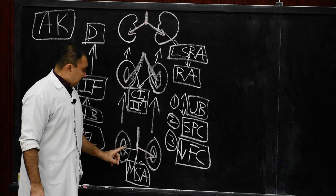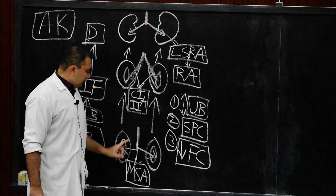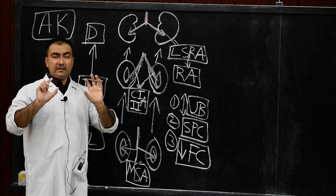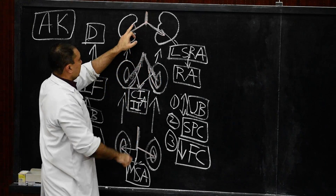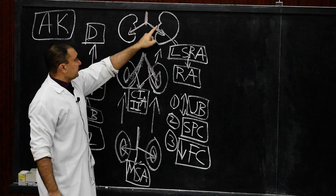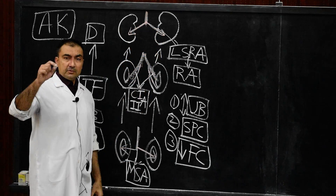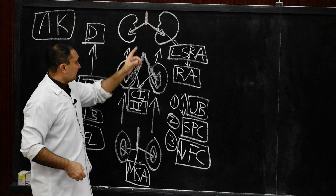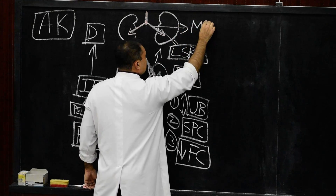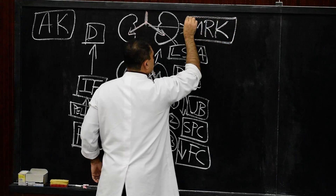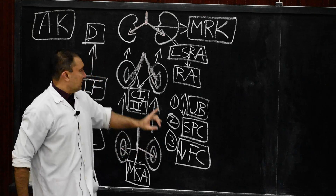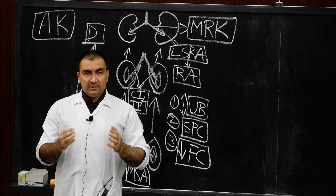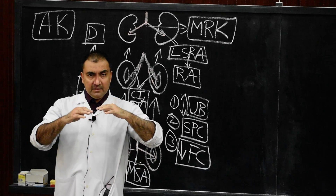Now, rotation of the kidney. Initially the hilum of the kidney is facing anteriorly, but as it ascends to its final position below the diaphragm, it rotates 90 degrees medially. So the hilum moves from an anterior-facing position to a medially-facing position — this is called the medial rotation of the kidney, 90 degrees. This medial rotation takes place once the kidneys reach the adult position below the diaphragm, concluding the topic of kidney development.